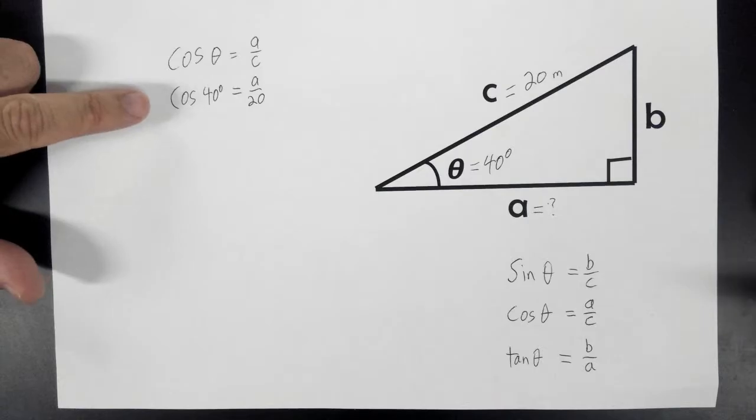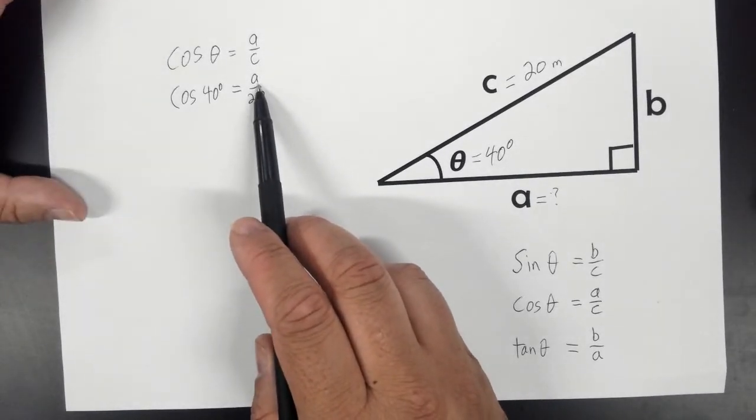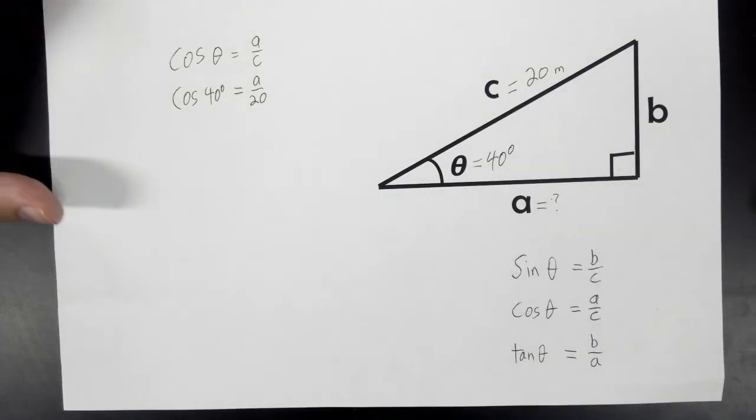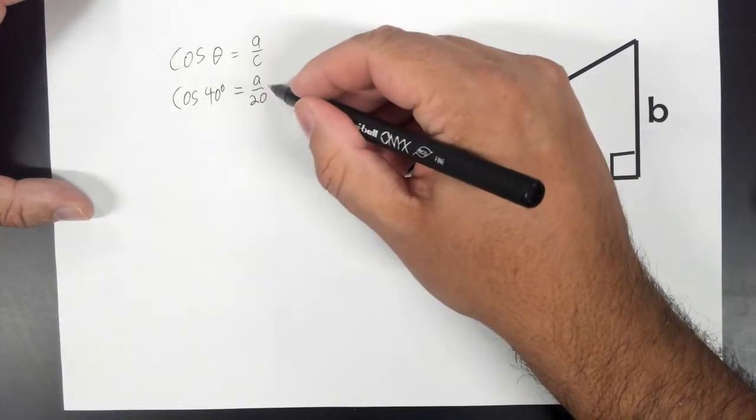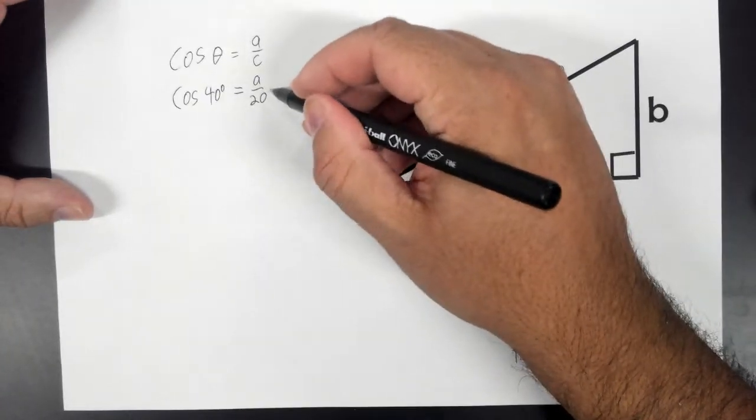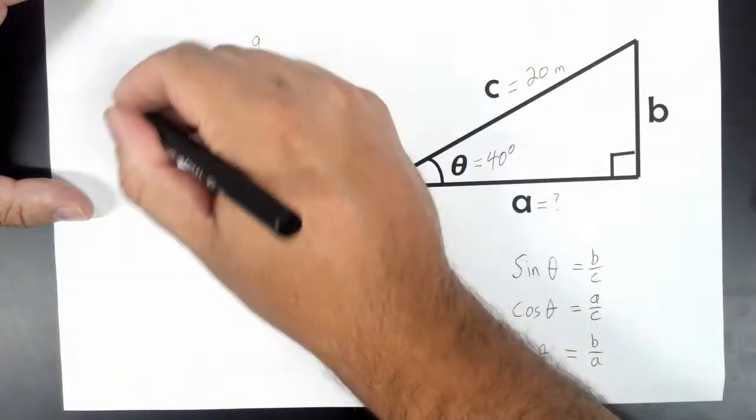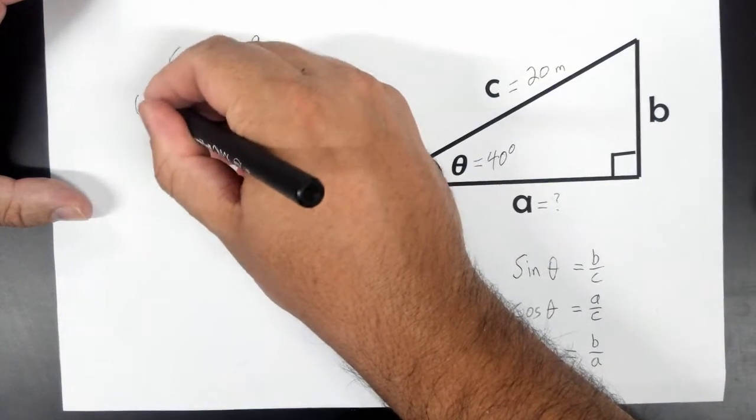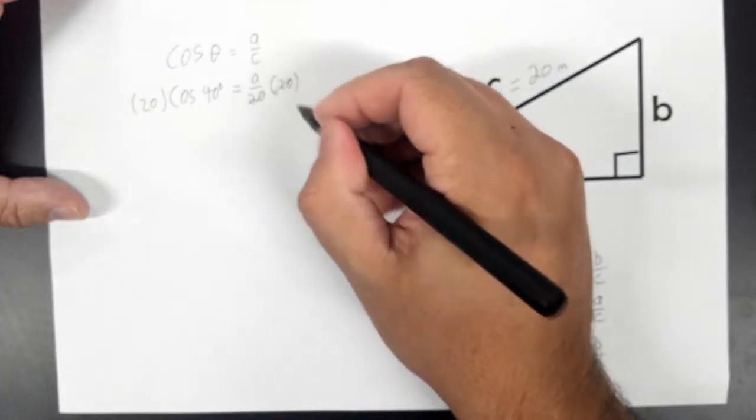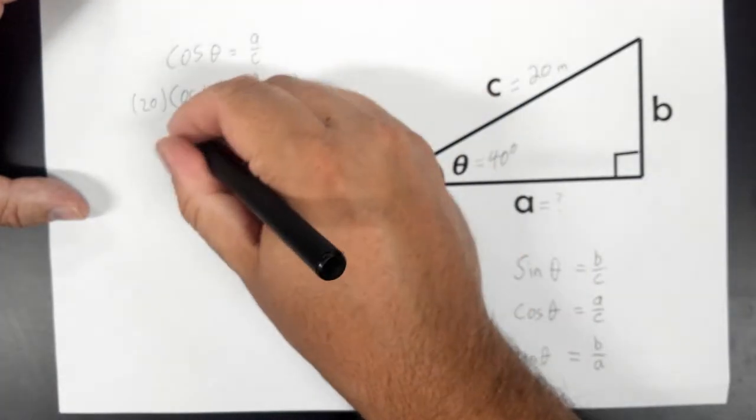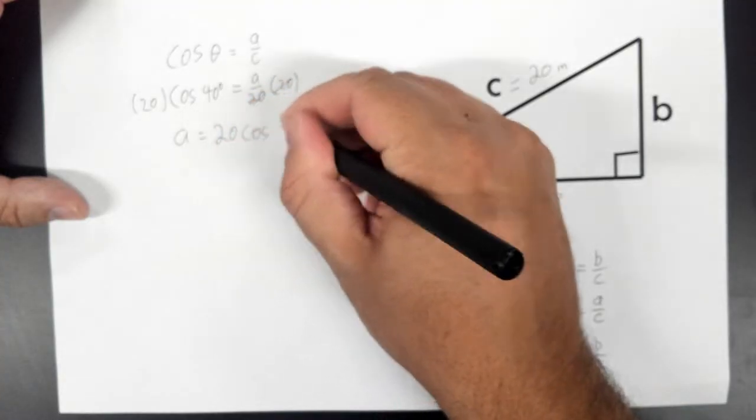Now we're going to use algebra to get A by itself, and that will tell us how long side A is. We want to get rid of this 20, so we'll multiply by 20 on both sides. What you do to one side of an equation, you have to do to the other. That causes these 20s to cancel out.